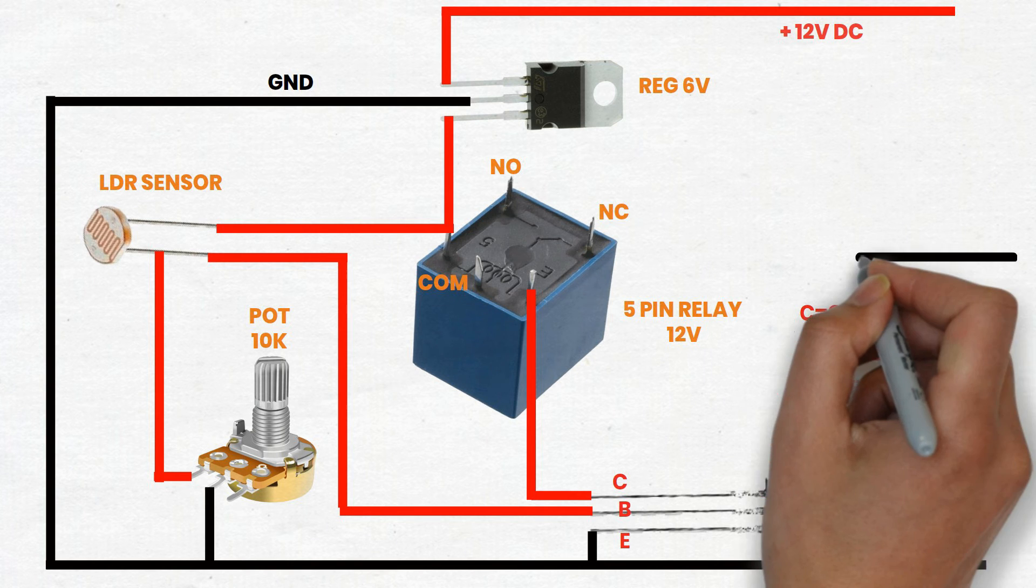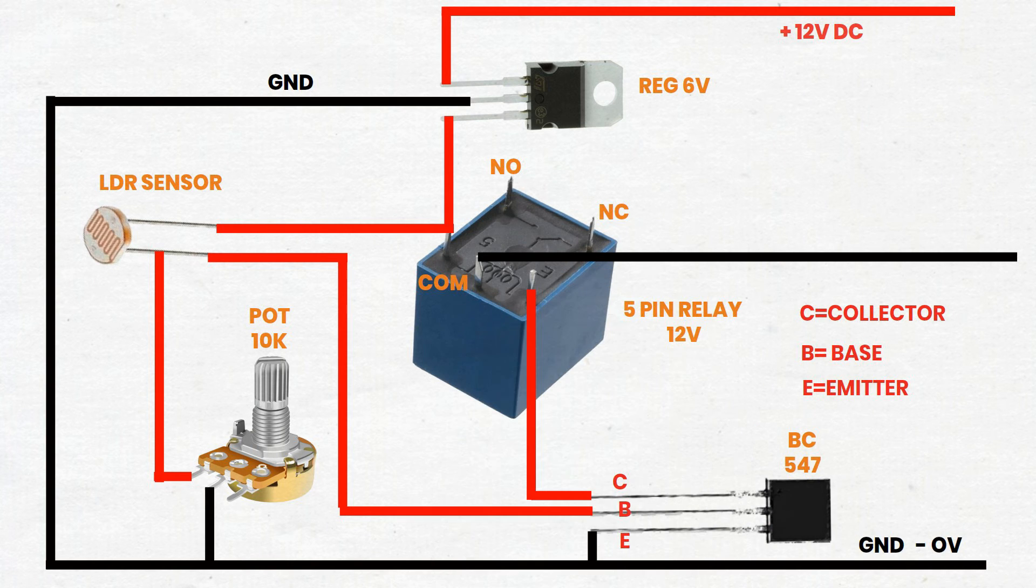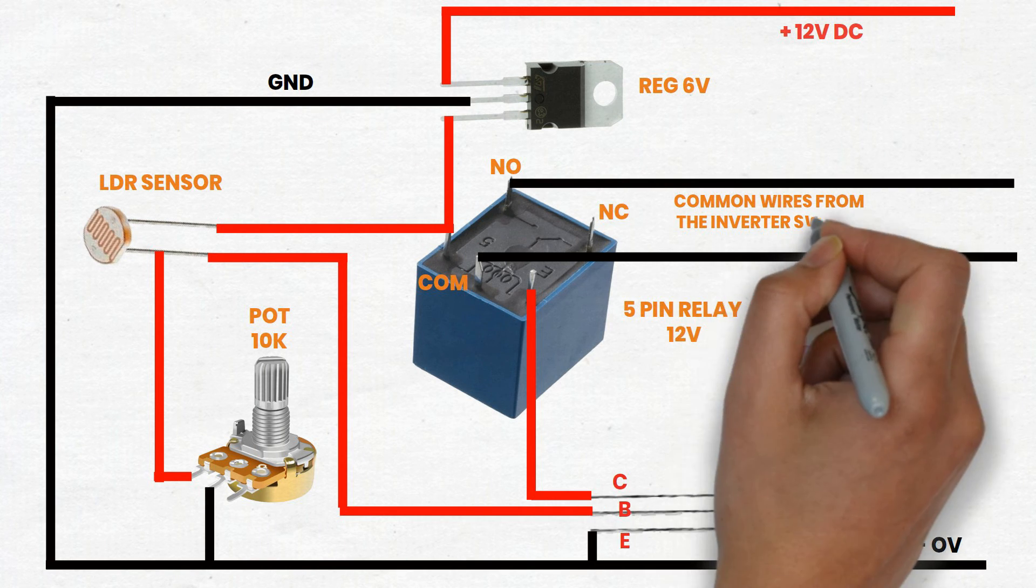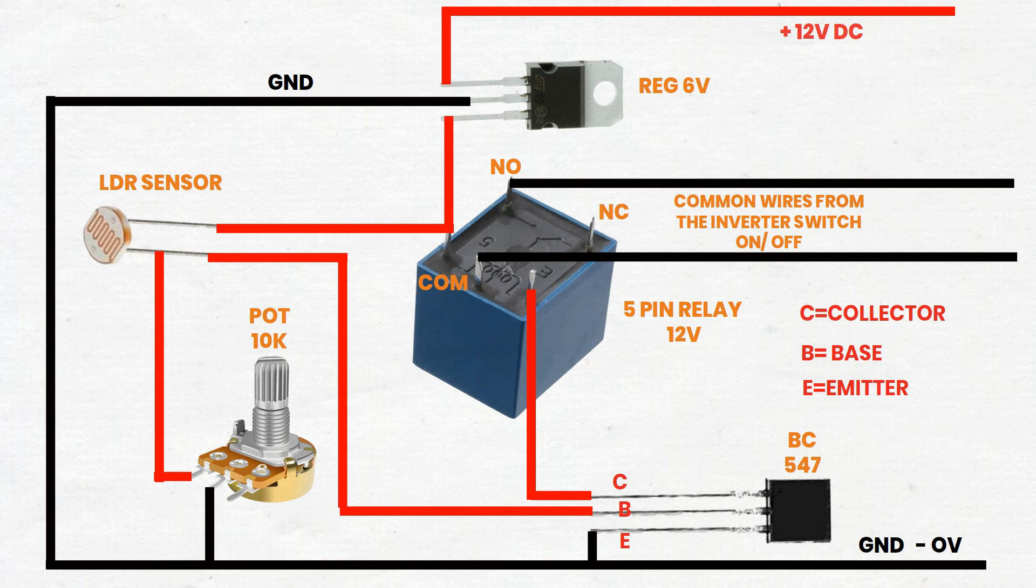Common (COM): connect to the positive terminal of the power source. Normally open (NO): connect to the positive terminal of your load, lamp or motor. Normally closed (NC): typically not used in this simple circuit.